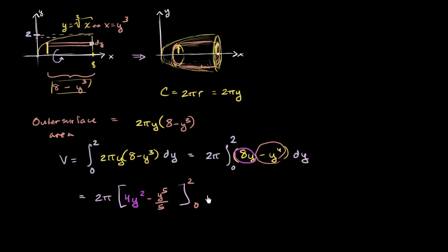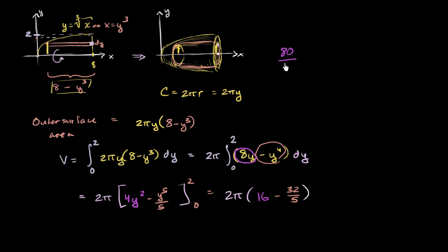We evaluate from 0 to 2. At y = 2: 2 squared is 4, times 4 is 16; then 2 to the fifth is 32, so minus 32 over 5. Evaluating at 0 gives 0. To simplify: 16 is the same as 80 over 5, and subtracting 32 over 5 gives 48 over 5.